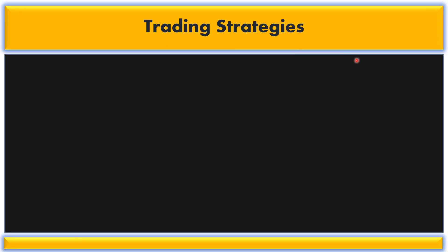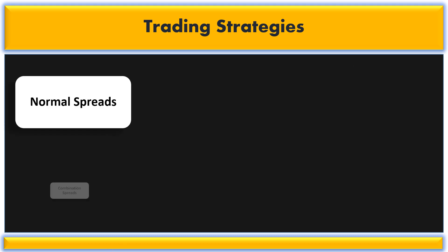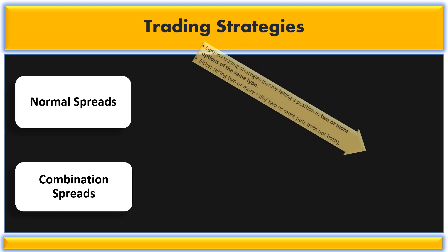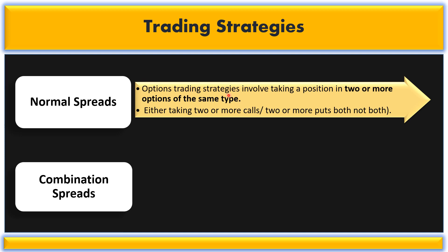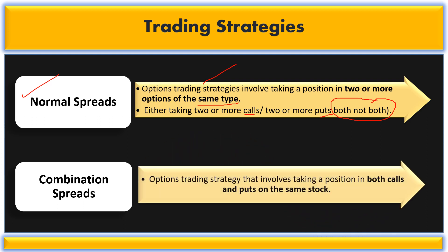Further, in trading strategies, I will be discussing in detail the normal spread and the combination spread. In normal spread, the option trading strategies involve taking a position in two or more options of the same type. Same type means that you are making a strategy either using call or using put — you can make a strategy by using two or more calls or two or more puts, but you cannot use both call and put together in normal spread. But in combination spread, the option trading strategies involve taking a position in both call and put on the same stock. That is why it's called a combination spread.